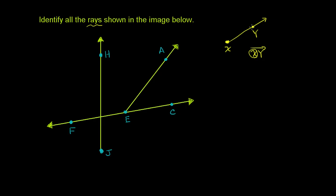The ray goes towards y, passes y, and just keeps on going. You need the second point to specify the direction — starting at x, going in the direction of y, meeting y, then going beyond y. With that out of the way, let's identify all the rays shown in the image below.